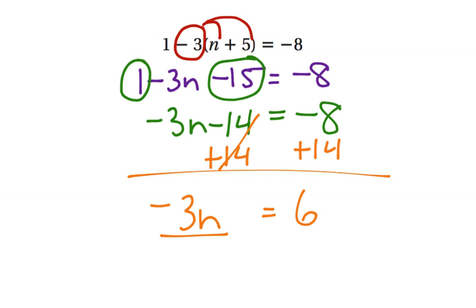We undo the multiplication by dividing both sides. We divide by negative 3—if we don't, it would leave a negative and we'd get negative n instead of just n. Dividing both sides by negative 3, we get n equals negative 2.